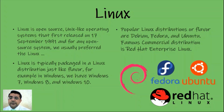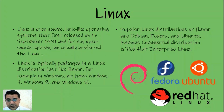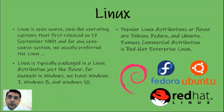Linux is typically packaged in a Linux distribution, just like flavors in Windows — Windows 7, Windows 8, Windows 10. The most popular and important Linux distributions are Debian, Fedora, and Ubuntu. The most important commercial distribution is Red Hat Enterprise Linux. Here you can see the signs or logos of Debian, Fedora, and Ubuntu.